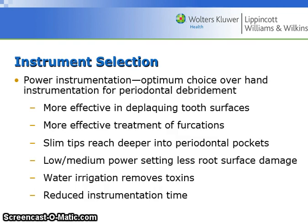Instrument selection: power instrumentation is the optimum choice over hand instrumentation for periodontal debridement — it is more effective in deplaquing tooth surfaces and for treatment of furcations. Slim tips reach deeper into periodontal pockets. Low to medium power settings cause less root surface damage. Water irrigation removes toxins and reduces instrumentation time.